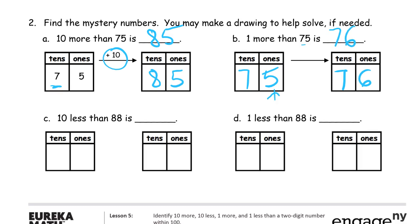Ten less than 88. So we're going to start with 88. That's eight tens and eight ones. Ten less means we're going to have one less tens. So instead of eight tens, we're going to have seven tens. We'll still have the eight ones, though. So ten less is 78.